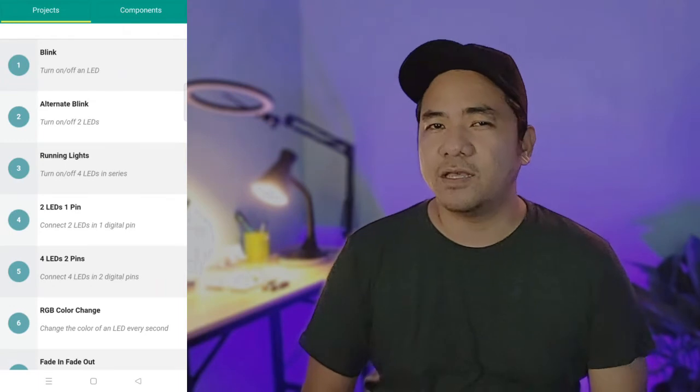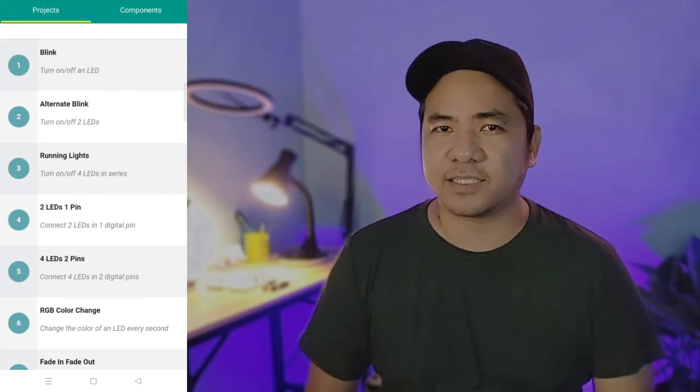Now, let's take this further and add two more LEDs. We want to make sure that only one LED is turned on at any given time. By turning on the next LED and turning off the previous one in succession, we can make a running lights effect. This is project number three in the Arduino intro app, which is the running lights project.